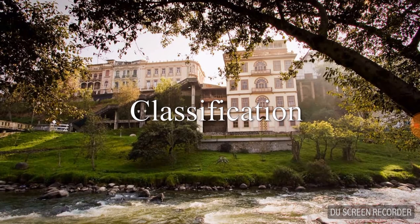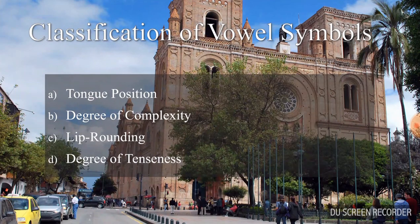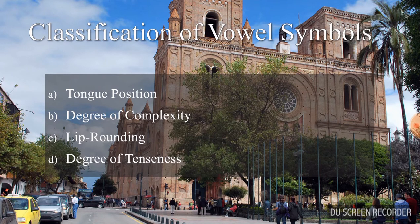Now let's talk about the classification of the vowels. Remember that vowels are always going to be voiced. They do not involve any particular place of articulation and do not obstruct the airstream. In order to classify the vowels, we are going to take a look at the tongue position, degree of complexity, lip rounding, and the degree of tenseness.